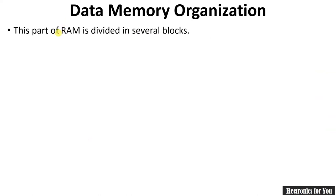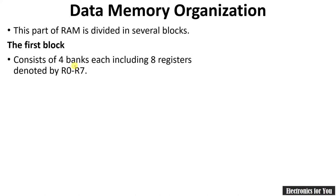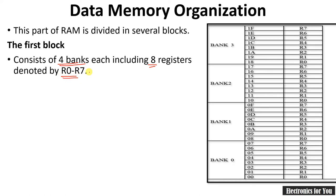This data memory can be divided into several blocks. The first block is called the register bank. There are four register banks, and each register bank includes eight registers; each register is 8 bits wide. These registers are named R0, R1, R2, R3, R4, R5, R6, and R7 respectively. The first block of data memory starts from 00h to 1Fh.